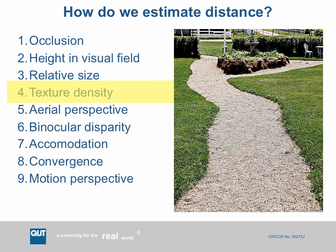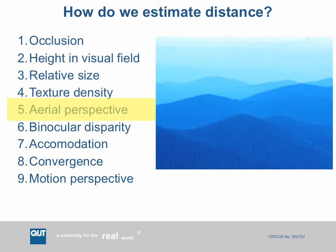Aerial perspective is the effect where as things get further away they tend to get fuzzier and also change colour a little bit, becoming more blue. This works over very large distances — tens of many kilometres rather than within your personal sphere. Another cue is binocular disparity, which I'll talk about quite a bit in the rest of the lecture. It's the fact that we view the world from two slightly different viewpoints from our two eyes, and from that we can get quite powerful information about the three-dimensional structure.